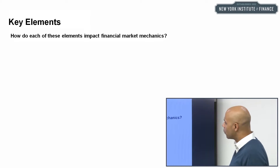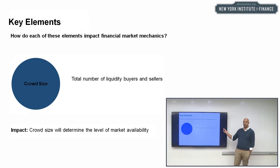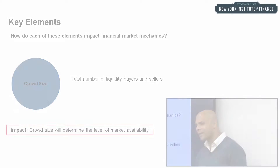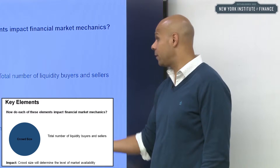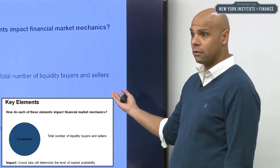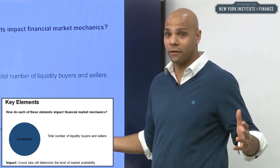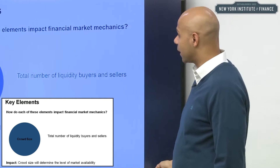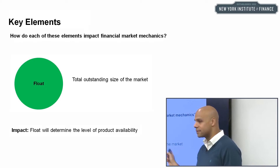The first element is crowd size — the total number of liquidity buyers and sellers in a given marketplace. Crowd size determines the level of market availability: how consistently is the market available to trade? If it's a small group, it won't be available to trade much; if it's a very large group, it will be available almost all the time. But it also depends on the other elements.